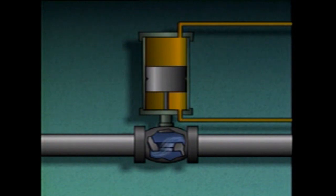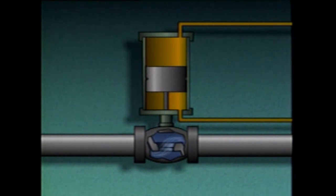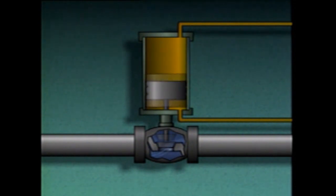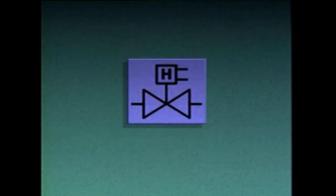When the flow of fluid is stopped, fluid is trapped on both sides of the piston, and the piston is held in place by the trapped fluid. The piston can be positioned anywhere in the cylinder by controlling the amount of fluid entering the cylinder through one port and bled from the cylinder through the other port. On a piping system diagram, a double-acting hydraulic actuator may be represented by this symbol.